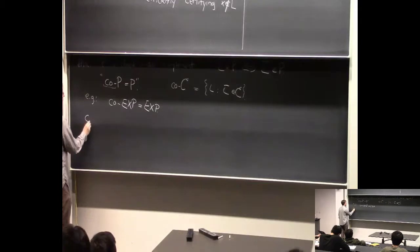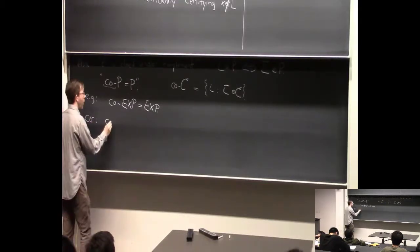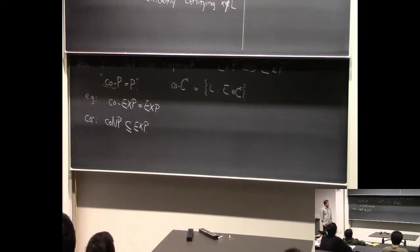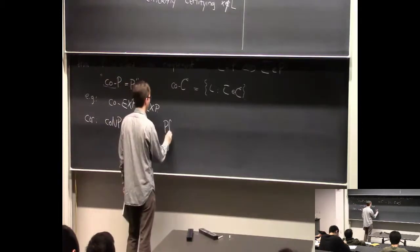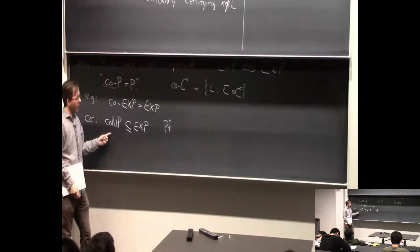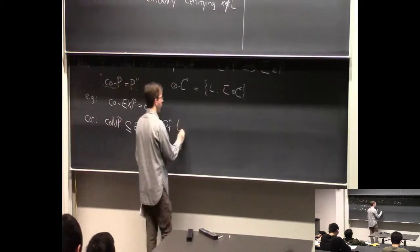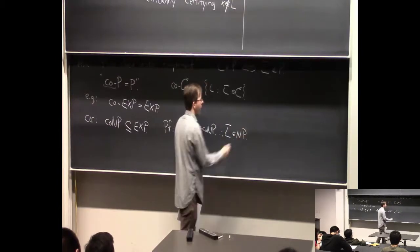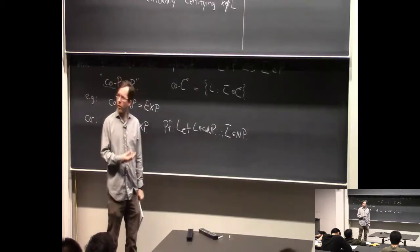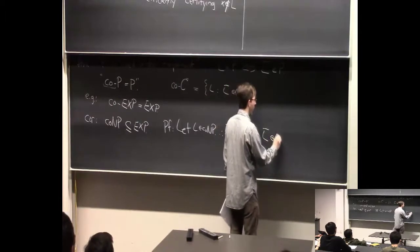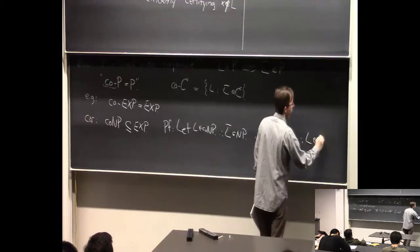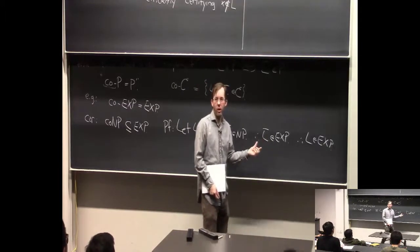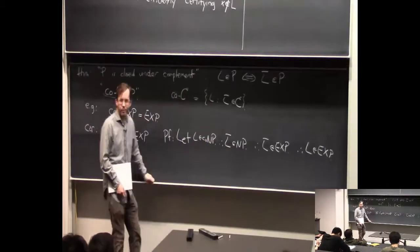So let's make a corollary: co-NP is a subset of EXP. Let L be in co-NP. The definition means L-bar is in NP. We know NP is a subset of EXP, so L-bar is in EXP. And since co-EXP equals EXP, L is also in EXP. This tells us that any language in co-NP can at least be solved in exponential time on a normal computer.